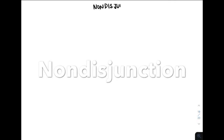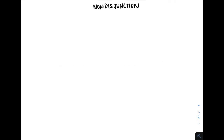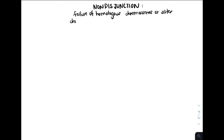Let's talk about non-disjunction. What is non-disjunction? Well, non-disjunction is the failure of homologous chromosomes to separate during meiosis I, or sister chromatids to separate during meiosis II. This will result in gametes with the incorrect number of chromosomes.